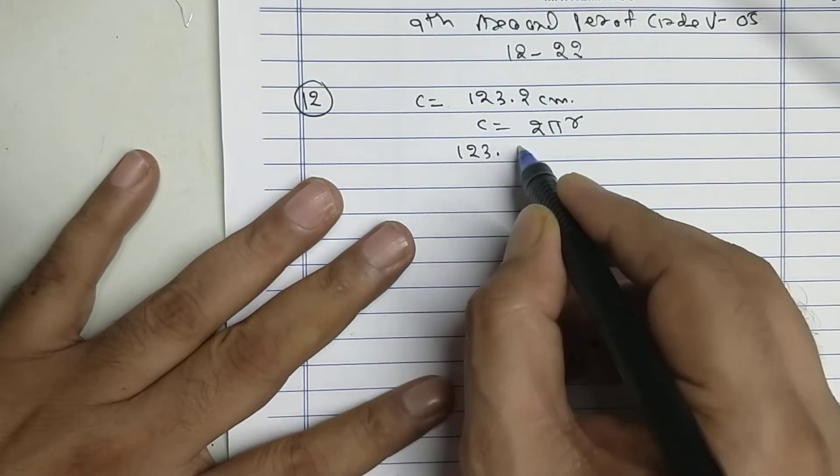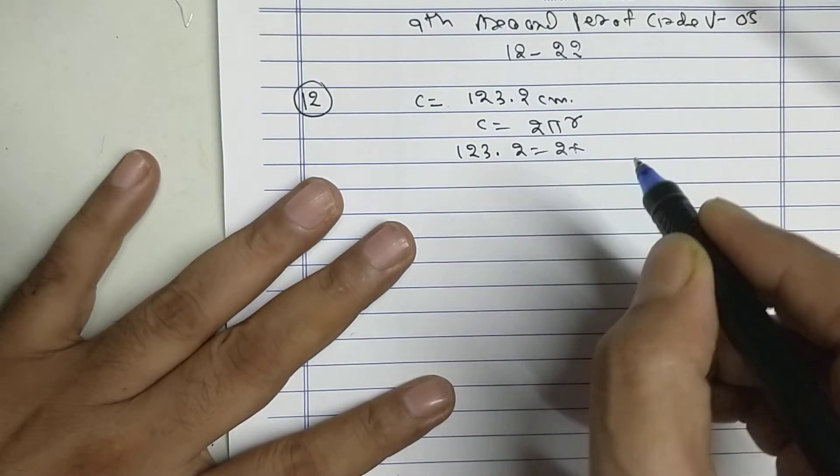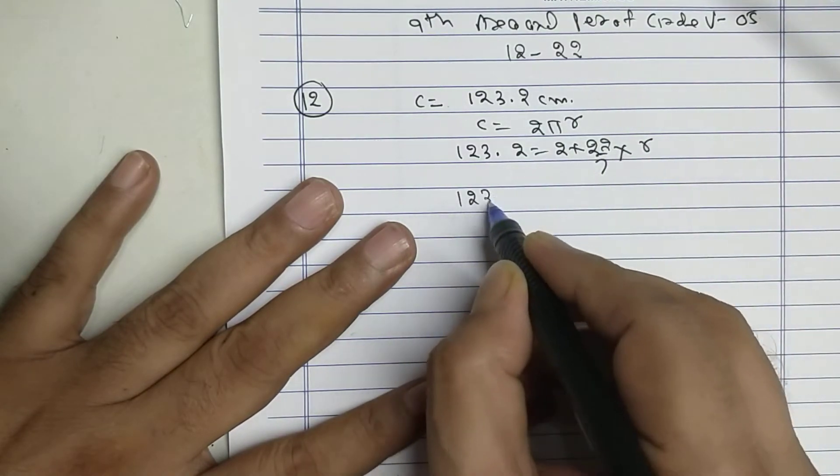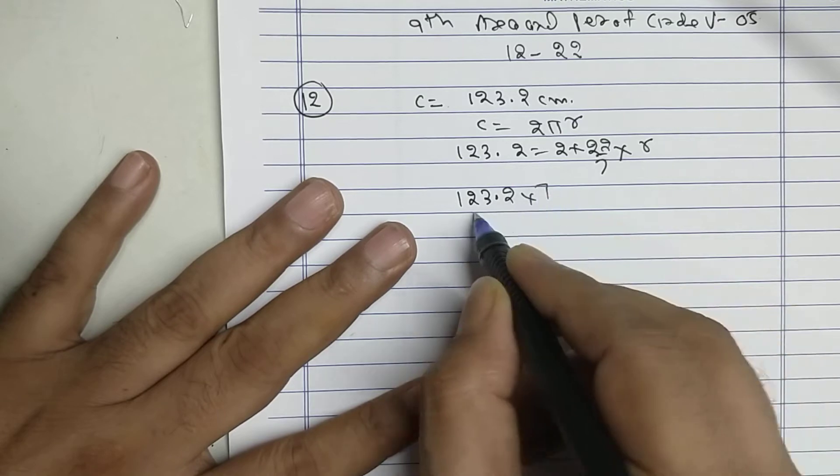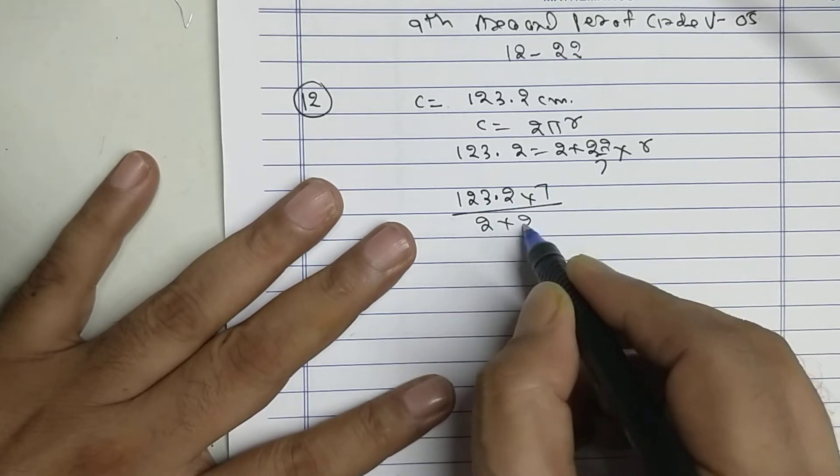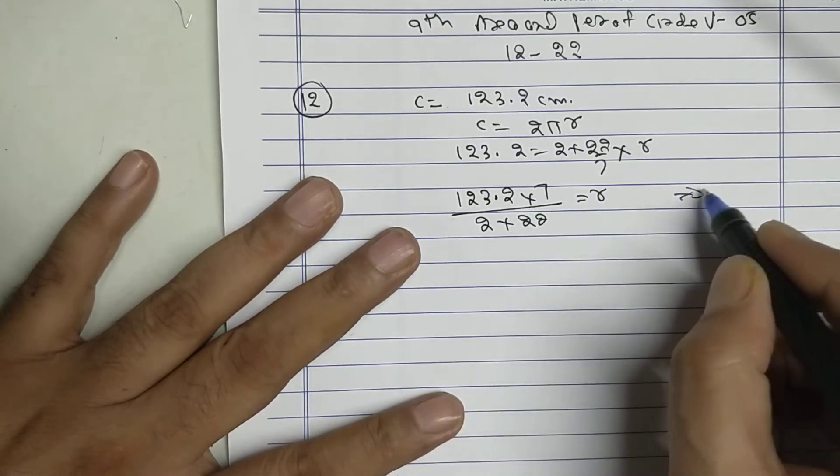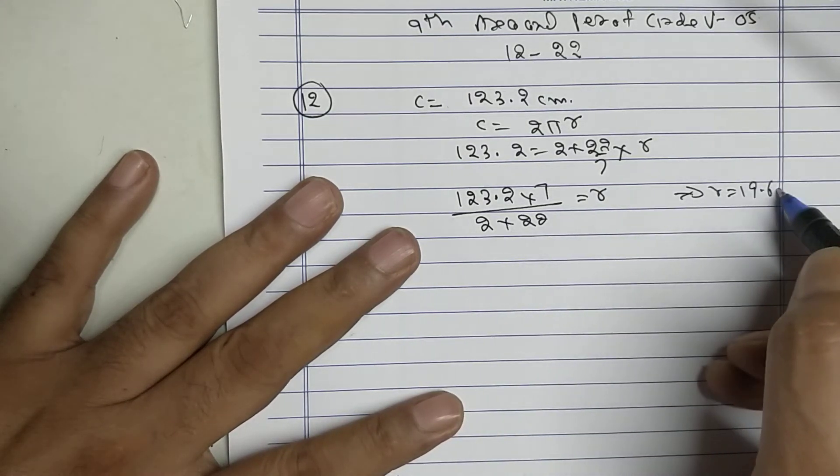123.2 equals 2 into radius I want to find, into 7. Calculate. Our radius is 19.6 cm.